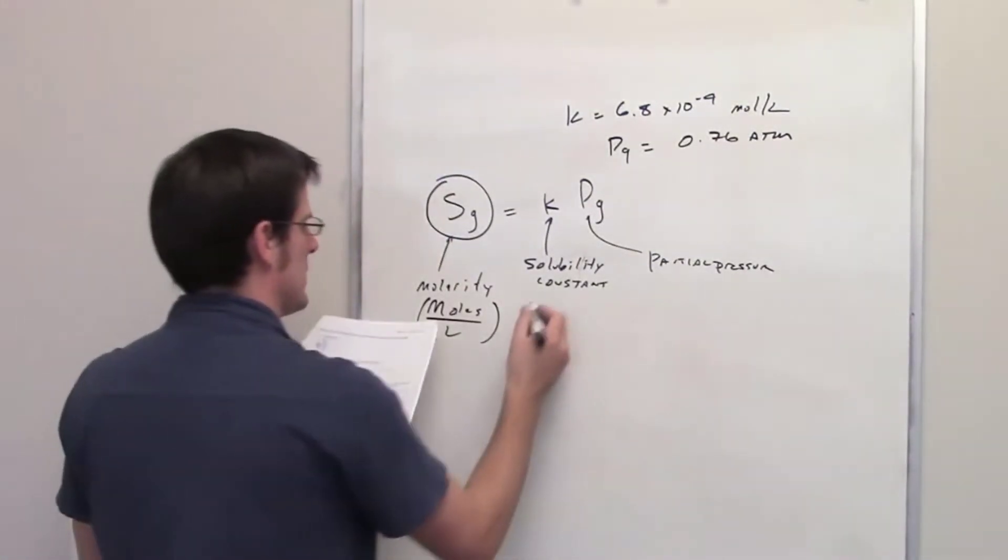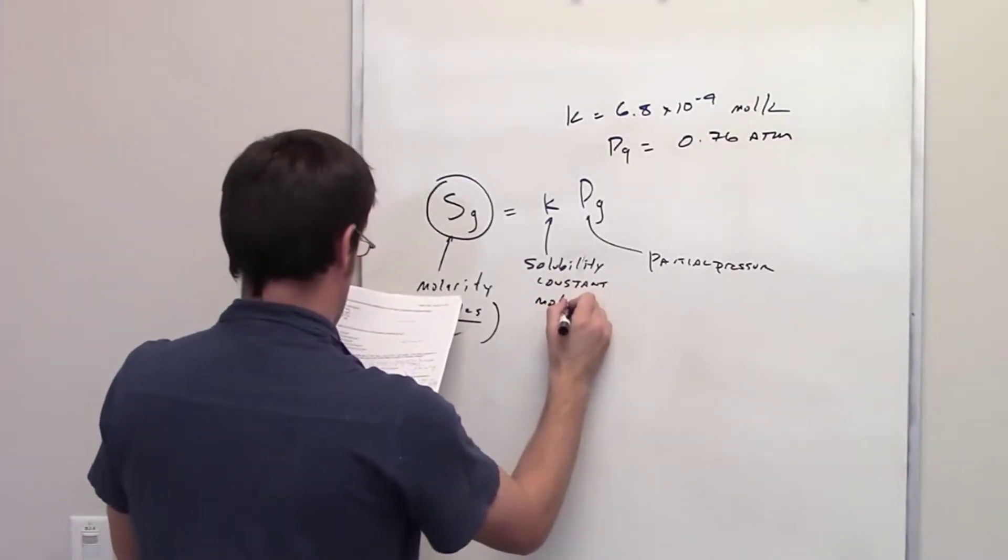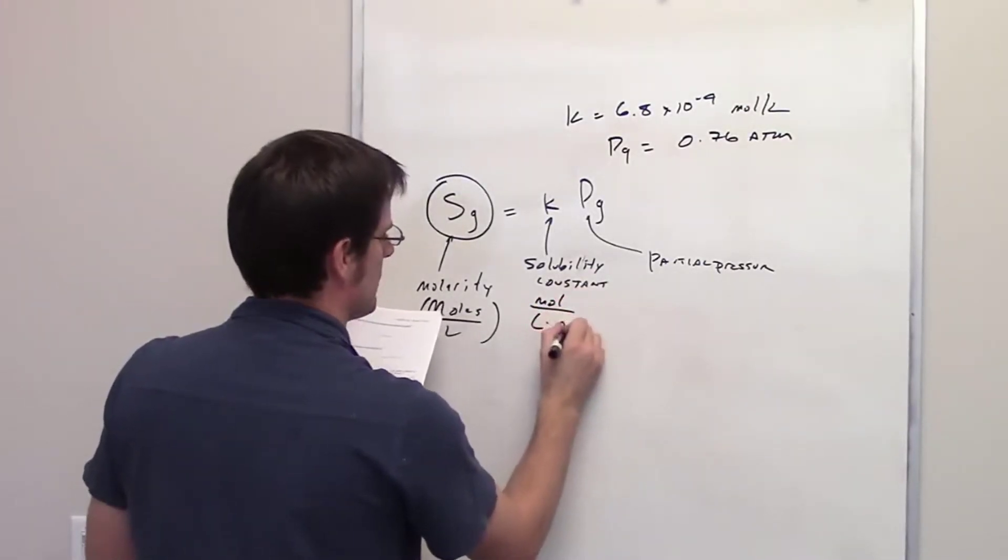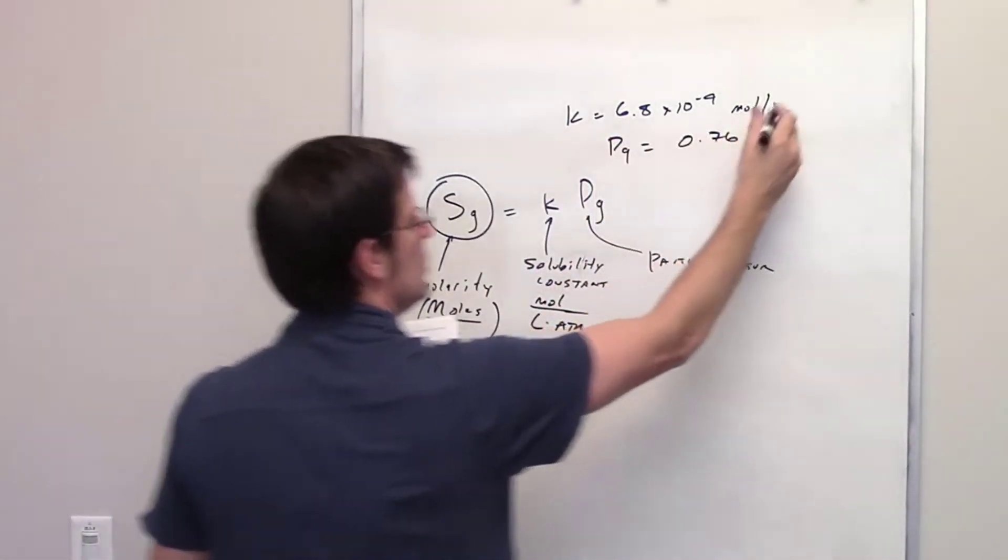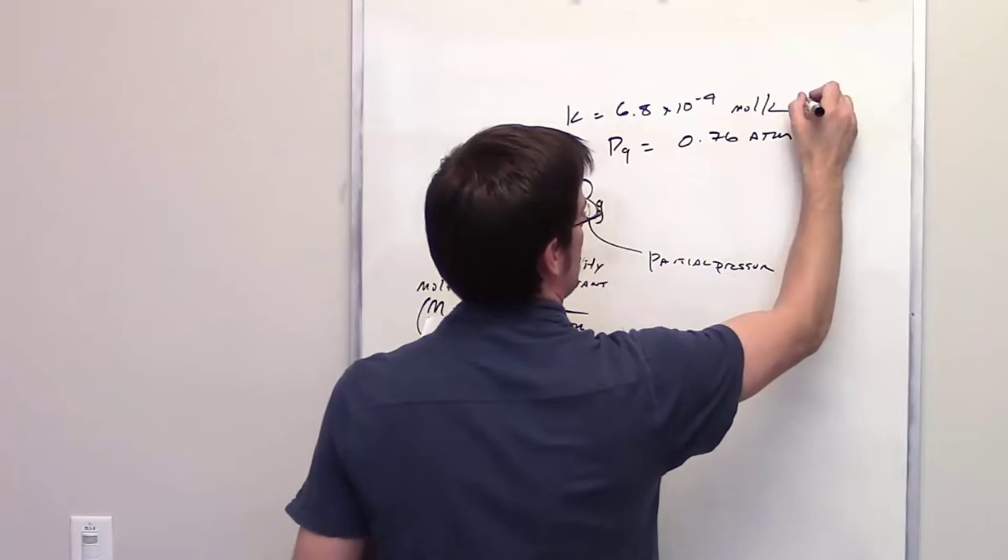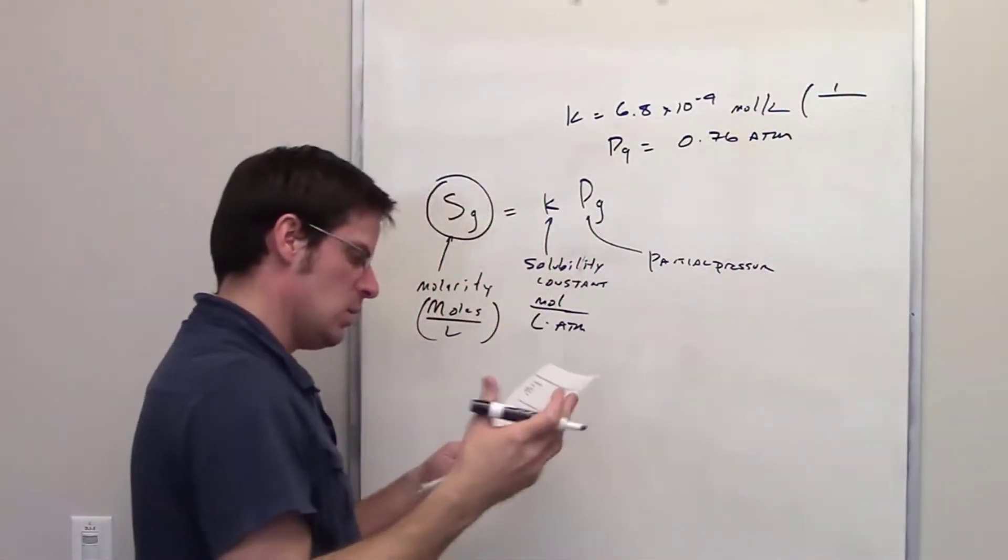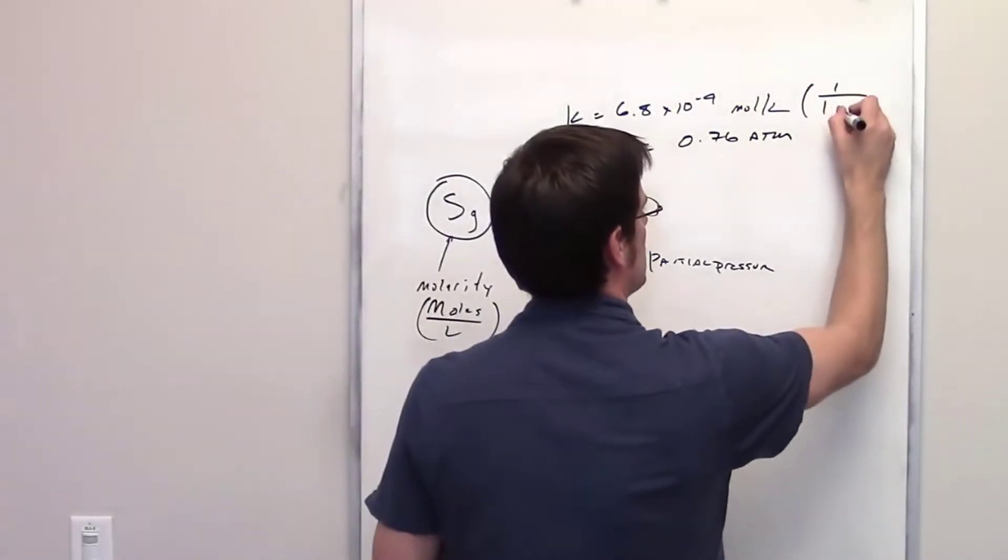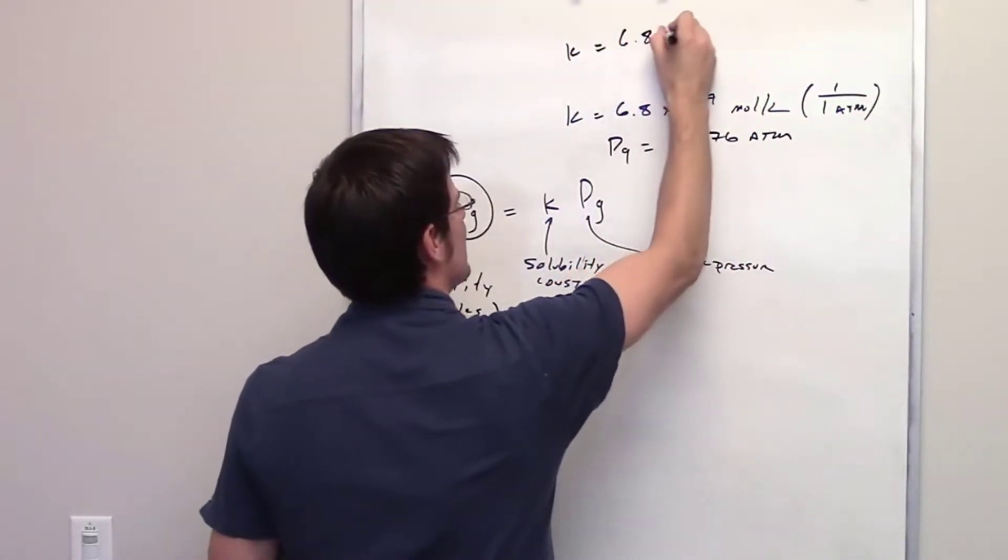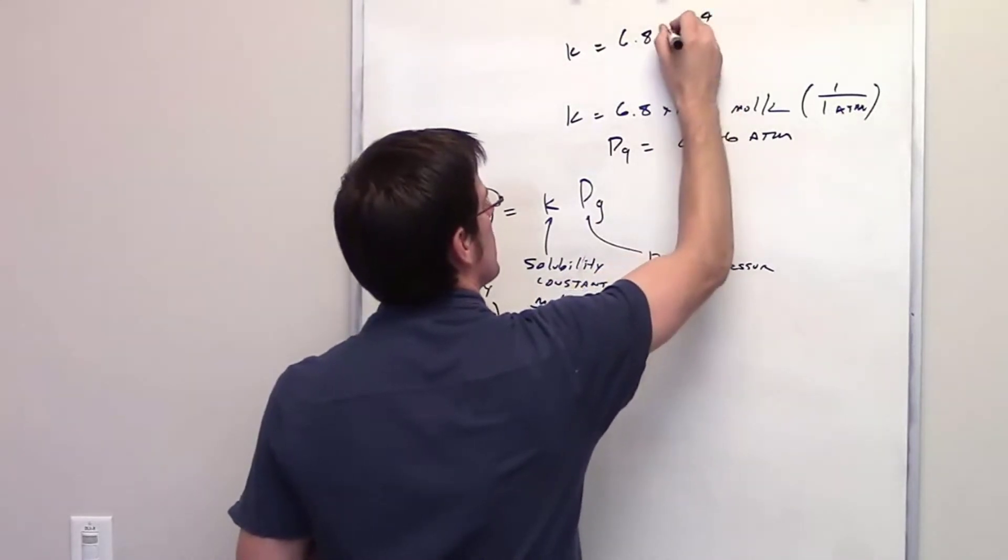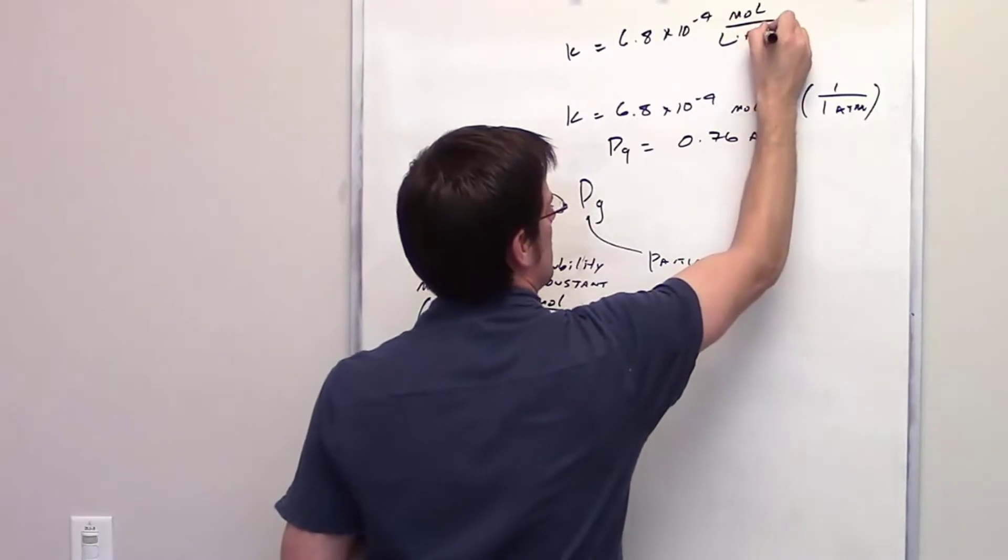I should point out that the solubility constant has to be in units of moles per liter atmosphere. And the way you handle that is by taking this value and dividing it by, or multiplying it, by 1 over the pressure that we've been given. Which in this problem is 1 atmosphere. So the true value of k is equal to 6.8 times 10 to the negative 4th moles per liter atmosphere in this particular problem.